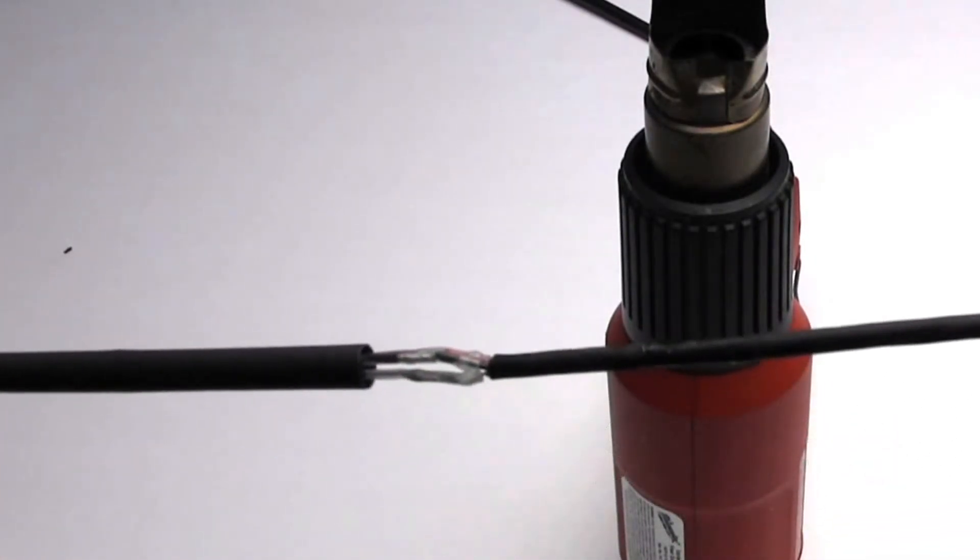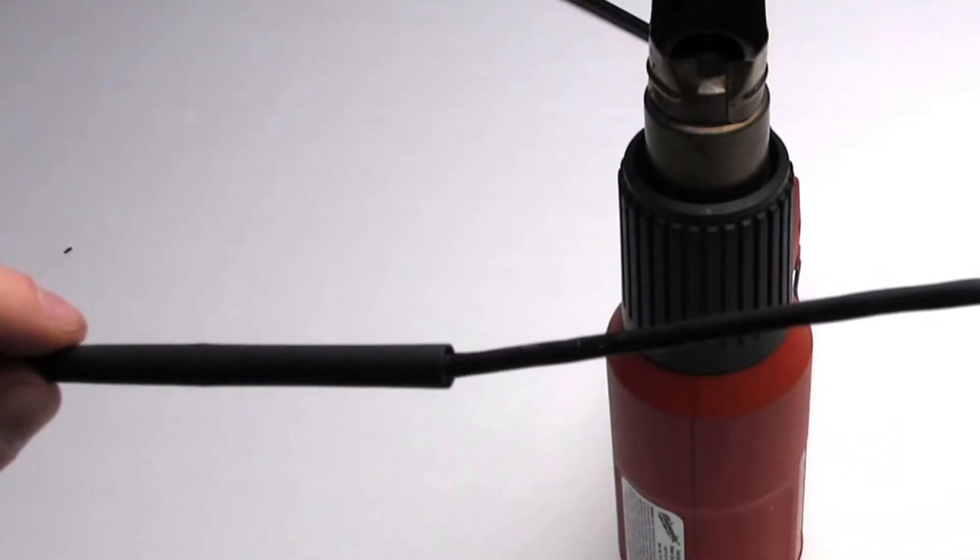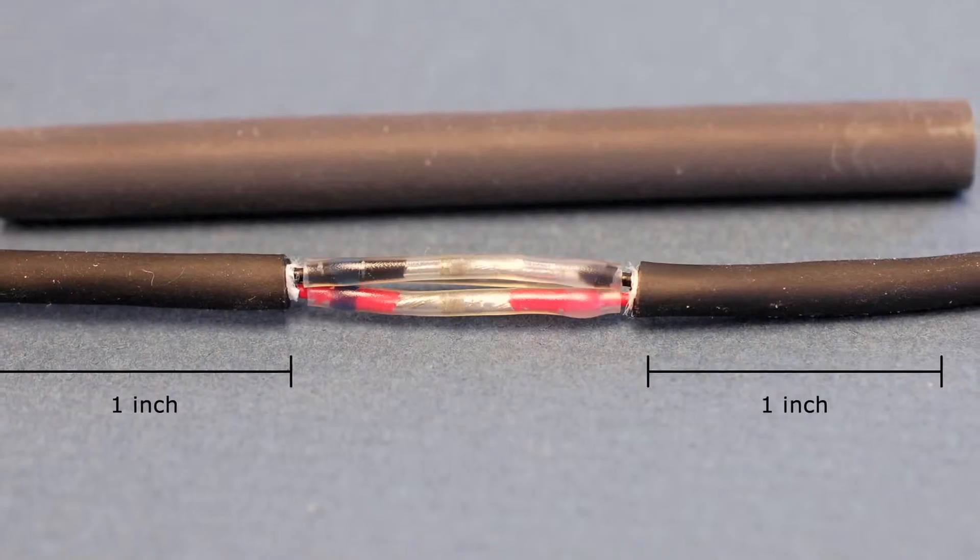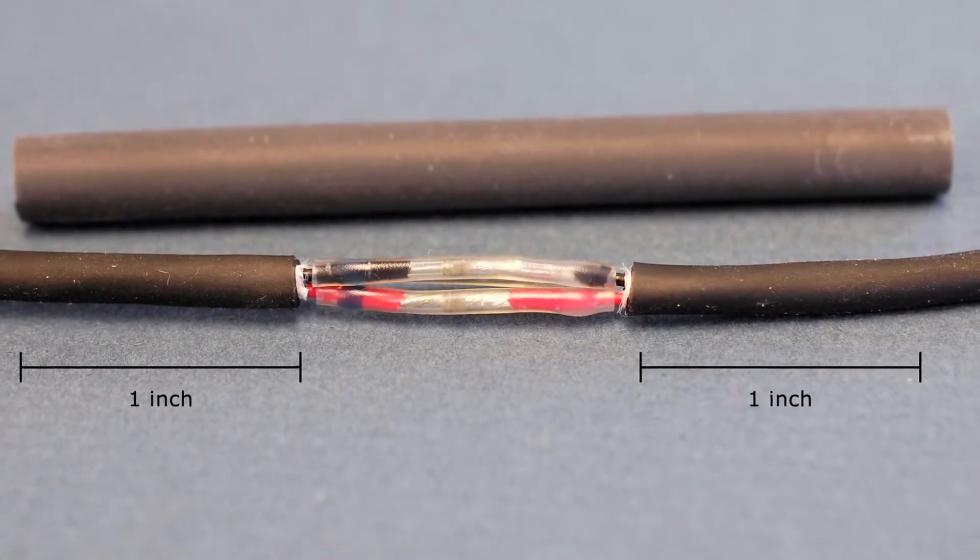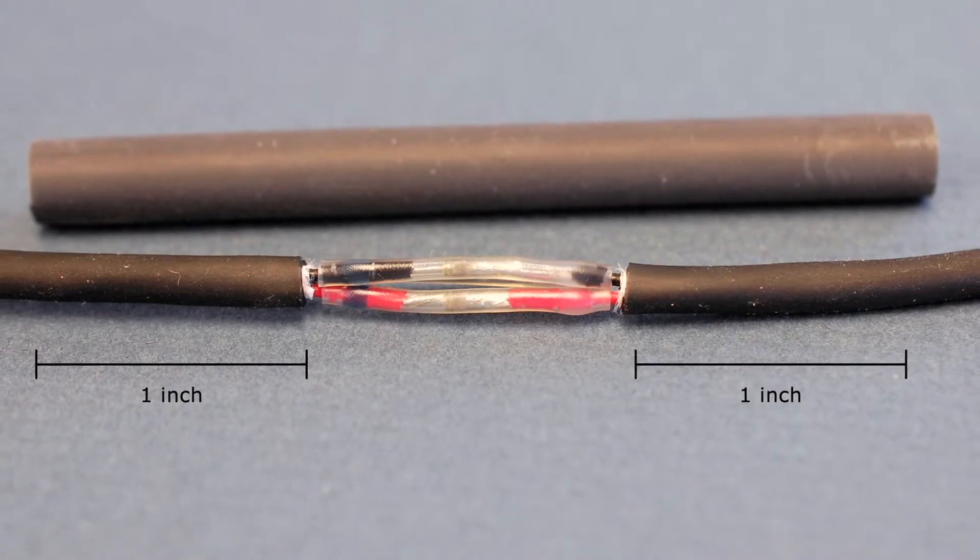For step six, slide the polyolefin adhesive lined heat shrink over the junction of the wires, this will seal the splice from the elements. Allow an extra one inch of coverage by the heat shrink on the outer jacket of cable to ensure a good seal.